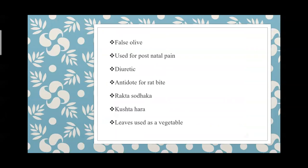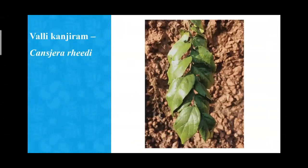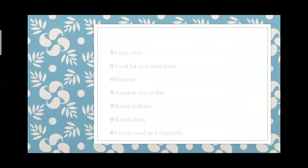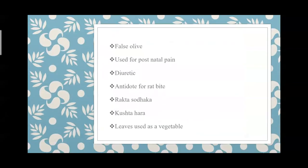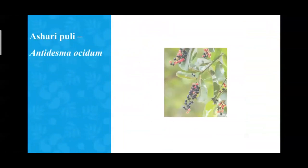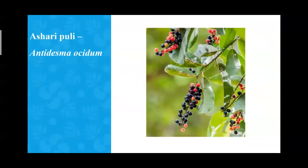It is considered for use in postnatal care and is told to be hepatoprotective and diuretic. Some folk traditions say it is used as an antidote for rat poison — the paste is applied over the bite site, or the leaf is rubbed over the site of the bite.